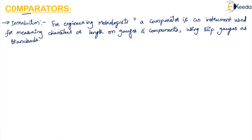So comparators are measuring instruments with which we can measure the diameters and the length on the gauges, and they use slip gauges as standards. The general principle of all comparators is to indicate differences in size between the standard and the work being measured by means of some form of pointer on a scale at a magnification which is sufficient to read to the accuracy required.